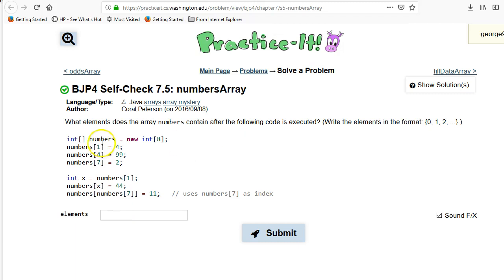So we're going to be printing out this array that they're constructing here. They're going to construct it here, and then they're going to do all these operations here. And then they want us to write the elements with these squiggly braces, which is actually exactly how Java will print them if you just try to print an array.